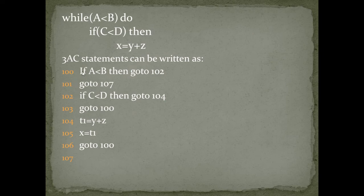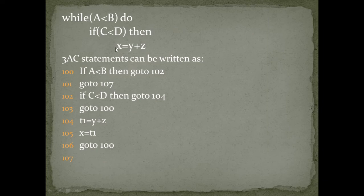At address 102, we write: if c less than d, then go to 104. In this programming statement, if c is less than d, then we need to execute the statement x equal to y plus z. So if c is less than d, control goes to address 104, where x equal to y plus z will be executed.